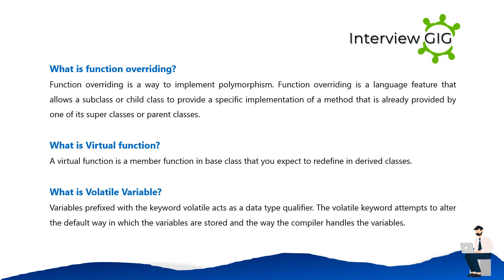What is function overriding? Function overriding is a way to implement polymorphism. It is a language feature that allows a subclass or child class to provide a specific implementation of a method that is already provided by one of its superclasses or parent classes. What is a virtual function? A virtual function is a member function in a base class that you expect to redefine in derived classes.